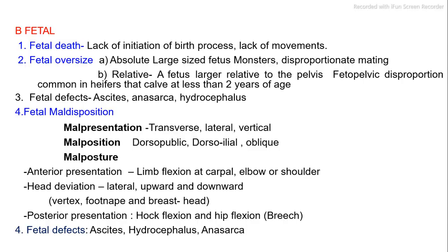Fetal causes of dystocia: 1. Fetal death — lack of initiation of birth process, lack of movements. 2. Fetal oversize: absolute (large-sized fetus, monsters, disproportionate mating) or relative (fetus larger relative to the pelvis, common in heifers calving at less than 2 years of age). 3. Fetal defects: ascites, anasarca, hydrocephalus. 4. Fetal maldisposition: malpresentation (transverse, lateral, vertical), fetopelvic disproportion, malposition (dorsopubic, dorsoileal, oblique), and malposture. Anterior presentation malpostures include limb flexion at carpal, elbow, or shoulder, and head deviation (lateral, upward, downward, vertex, nape, and breast head). Posterior presentation malpostures include hock flexion and hip flexion (breech).